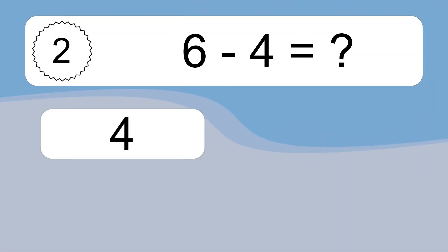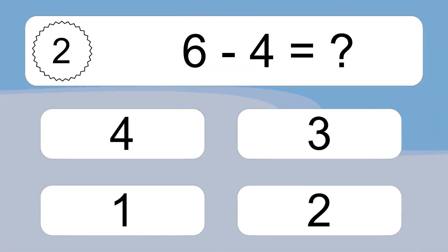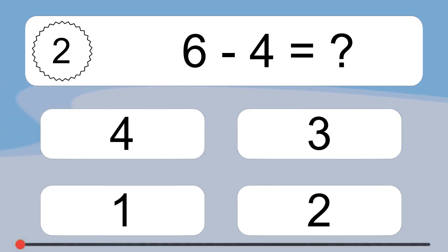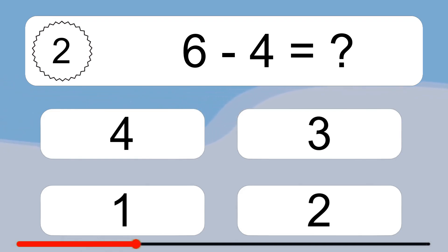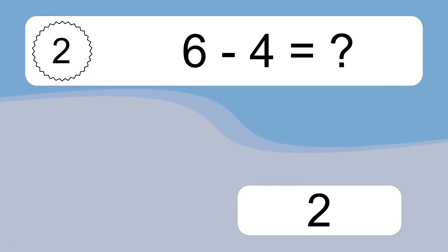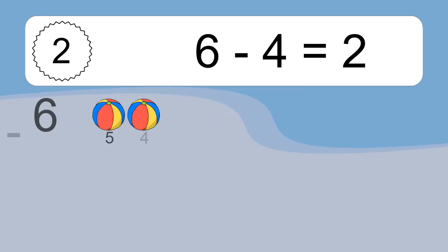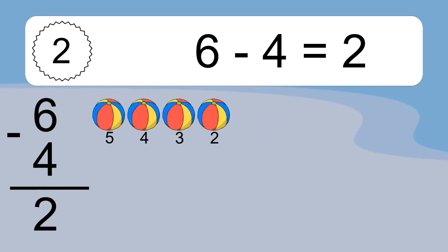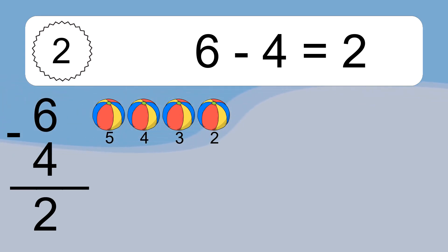6 minus 4 equals what? 6 minus 4 equals 2. Let's count it: 5, 4, 3, 2.